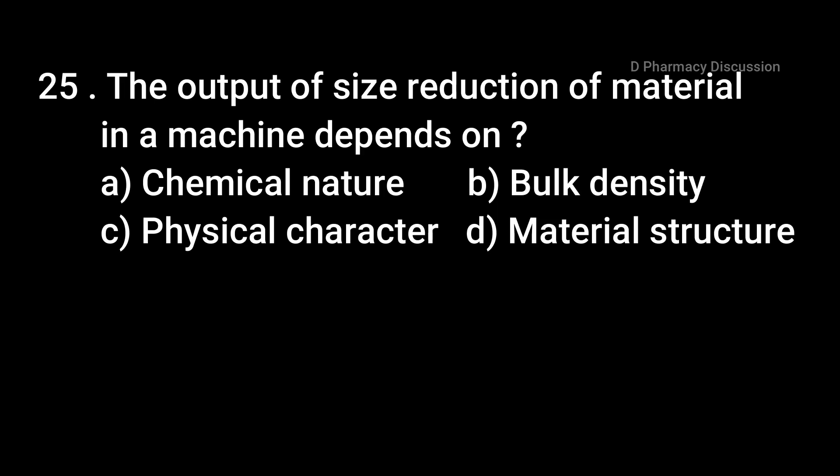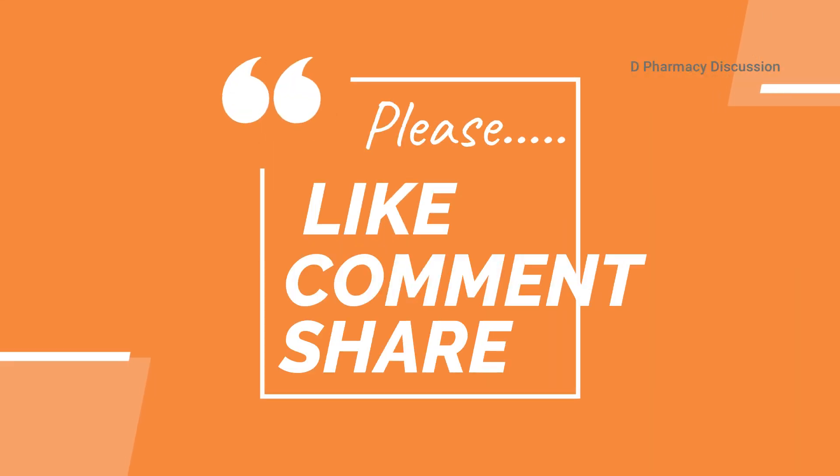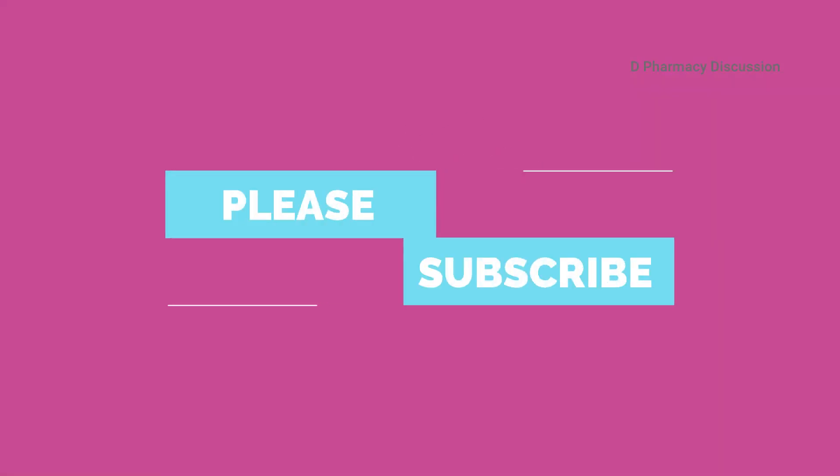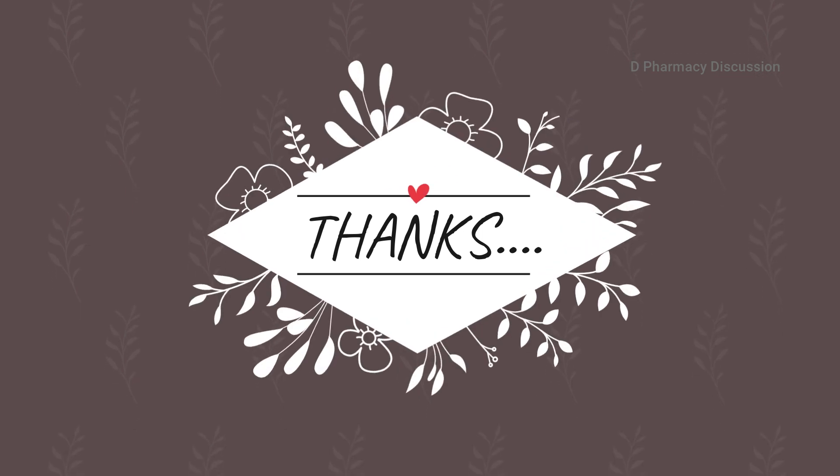Question 25: The output of size reduction of material in the machine depends on. Option A: chemical nature, B: bulk density, C: physical character, and Option D: material structure. Correct answer is Option B, bulk density. That's all for today's session. If you liked the video, don't forget to hit the subscribe button. Thank you so much.